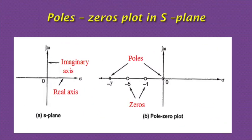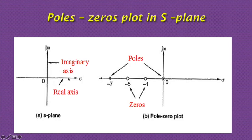Poles-zeros plot in the S-plane. The plane in which the poles and zeros appear is the S-plane of the Laplace transform. The poles and zeros of a transfer function may be complex, and the system dynamics can be represented graphically by plotting their locations on the complex S-plane. S is a complex variable: S equals sigma plus j*omega, where sigma is the real part and omega is the imaginary part. The symbol X denotes poles and the symbol O denotes zeros of the system.